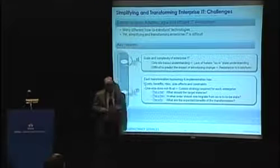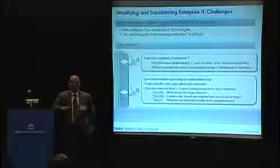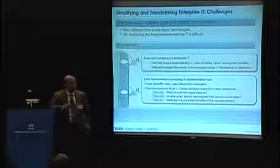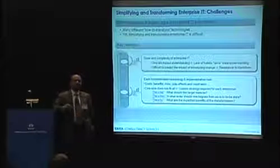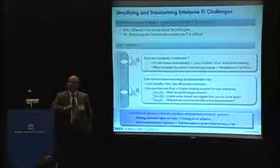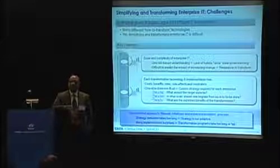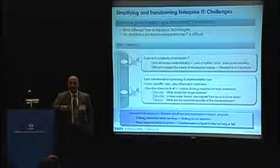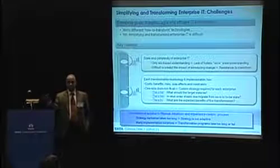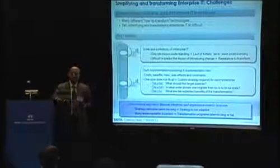The second issue is that while there are many technologies available, there are also many implementations of the same technology, each with constraints about when they can be applied, as well as costs, benefits, risks, and side effects. Unfortunately, deriving and executing a transformation plan today is a very manual, intuition-centric exercise. We spend a large amount of time understanding the current state and determining what to do — this takes months, and by the time you've derived a strategy, something has already changed, so your strategy is no longer solving the original problem.